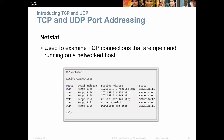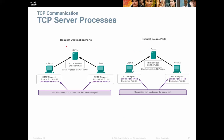The way server processes work: the request destination ports use well-known port numbers. Client one will send to port 80 or port 25. On the return, they use a random or semi-random source port number — computers can never be totally random — but it's a port assigned by the computer so that when the response comes back, it knows which port to use.